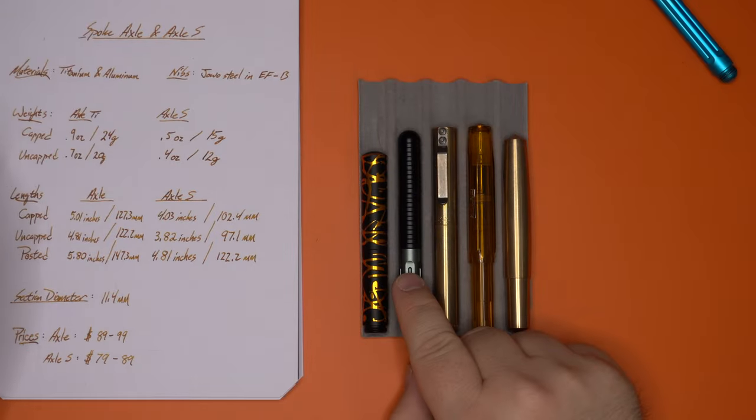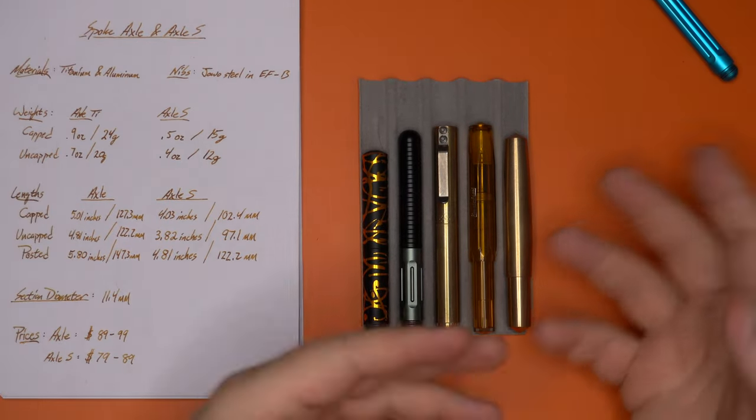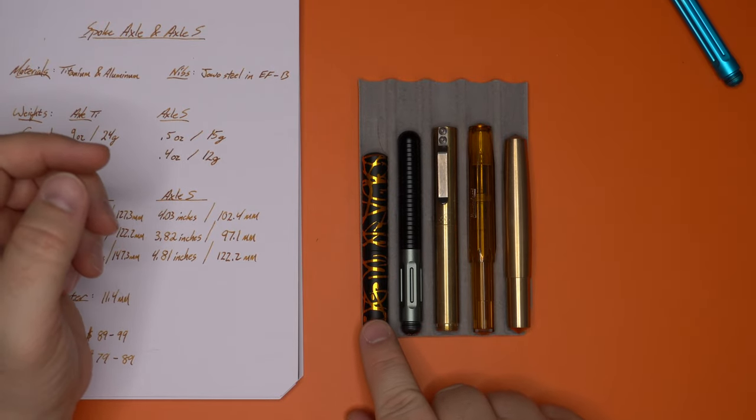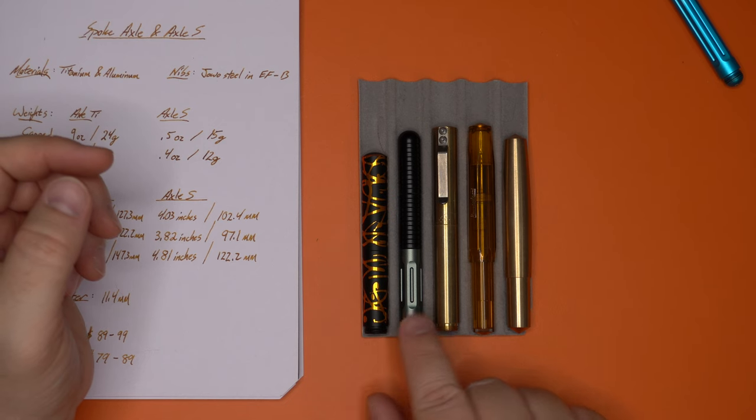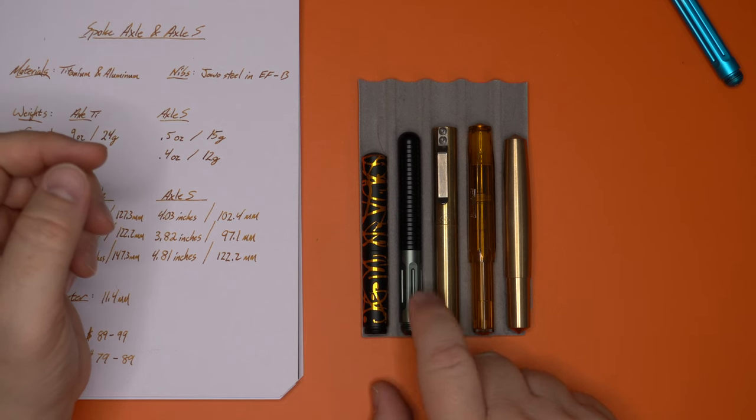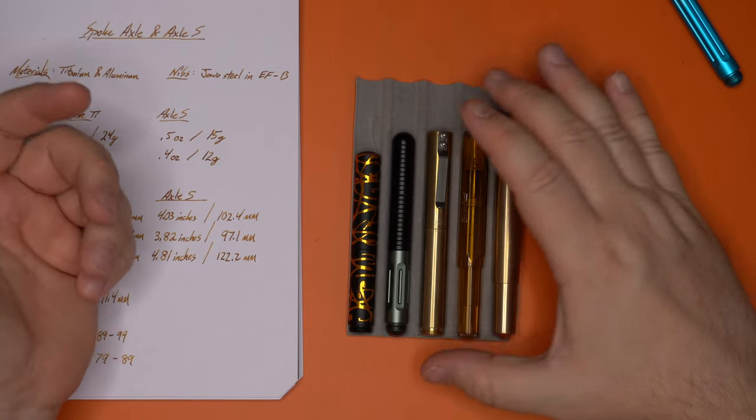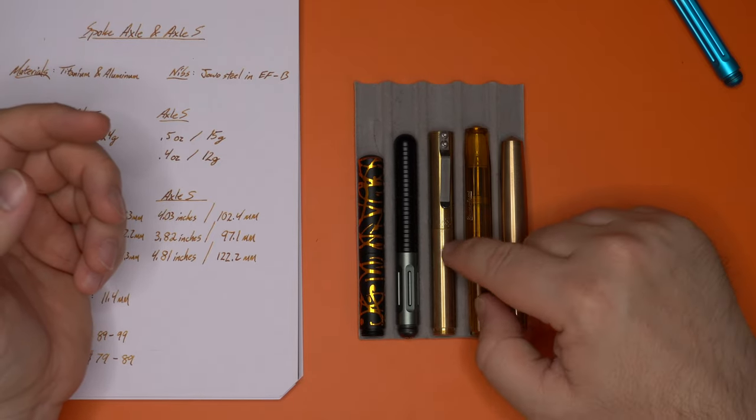Okay. So here we have the Axle S. We're going to do these one at a time because they're very different size pens. So here we have the Schoen Design Pocket 6, which is a little bitty pocket fountain pen. Then you have the Spoke Design Axle S, the Schoen Anniversary pen, which is a slightly larger version.